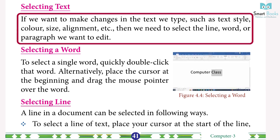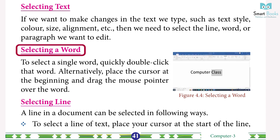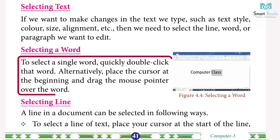Selecting Text: if we want to make changes to text such as style, color, size, or alignment, we need to select the line, word, or paragraph we want to edit. Selecting a Word: to select a single word quickly, double-click that word.